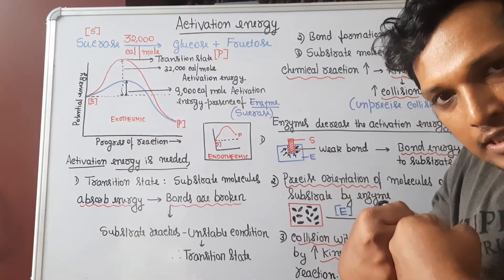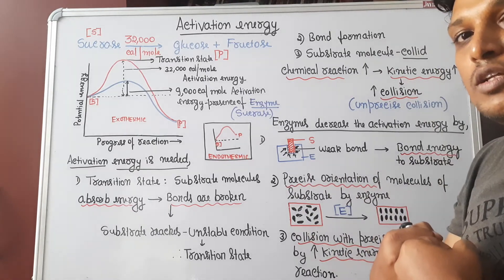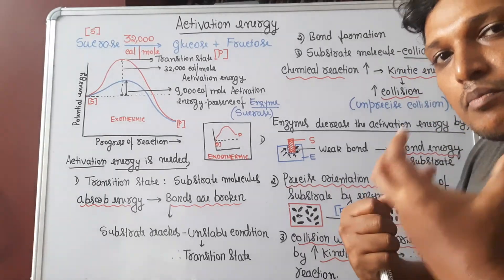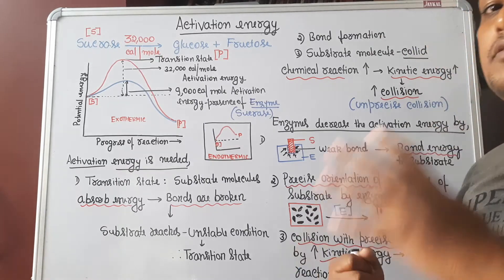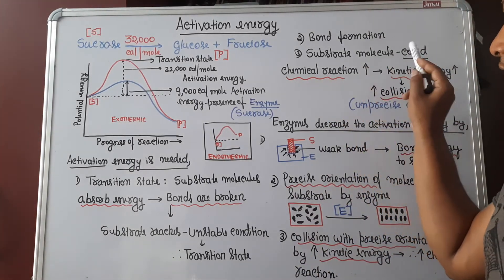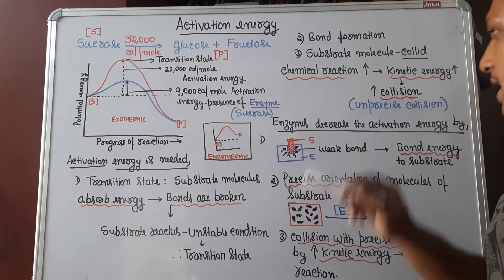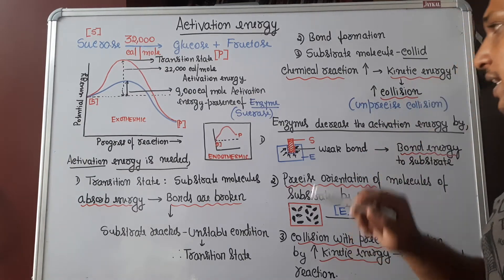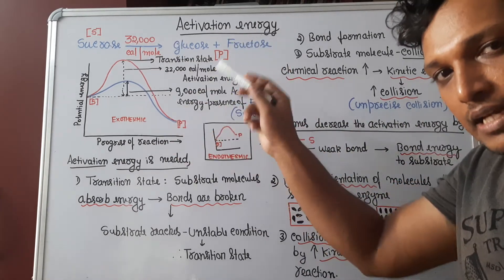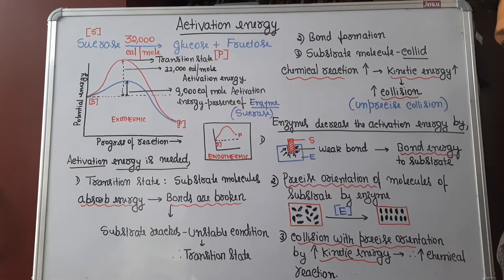Collision means the kinetic energy of the system must be more. To increase kinetic energy of the system, the substrate needs activation energy. Substrate molecules, in order to collide and increase chemical reaction, need more kinetic energy — that kinetic energy is provided by taking up external energy in the form of activation energy.